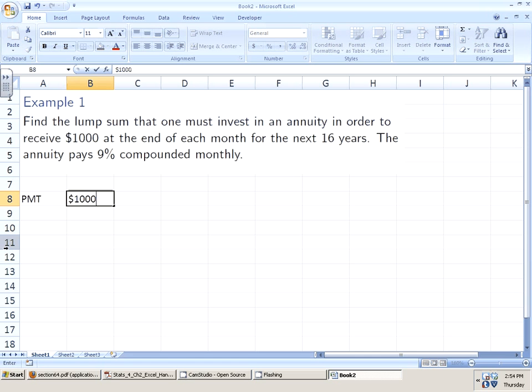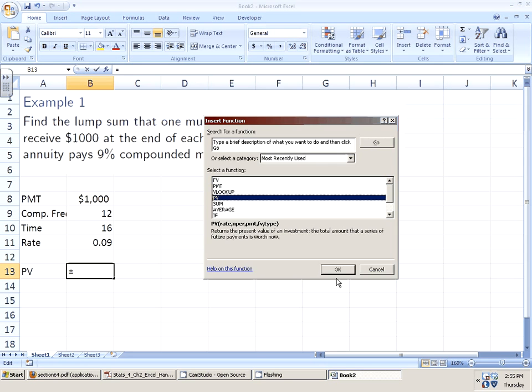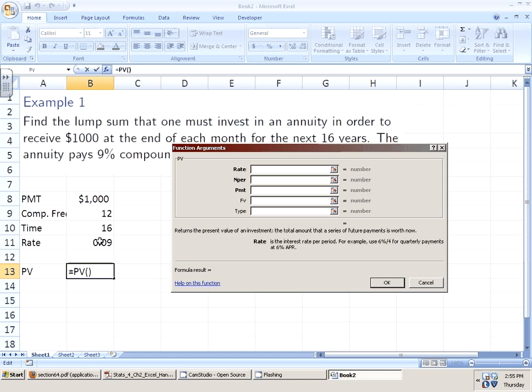They're going to be paid $1,000 at the end of each month. So that's the compounding frequency. The time on that is 16 years and the rate is 9%. So 0.09. We want to find out the present value. Pretty straightforward. F sub x. Present value shows up there near the top. Let's do the work.